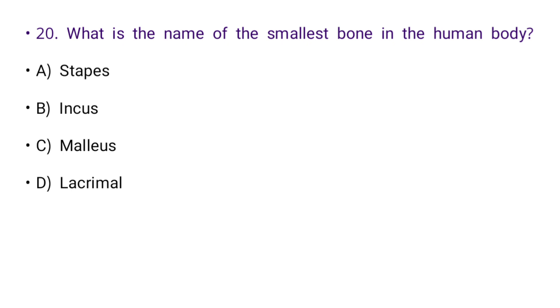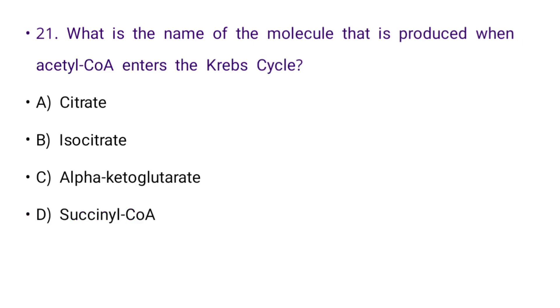Next: What is the name of the smallest bone in the human body? Options: stapes, incus, malleus, or lacrimal. The right answer is A: stapes.